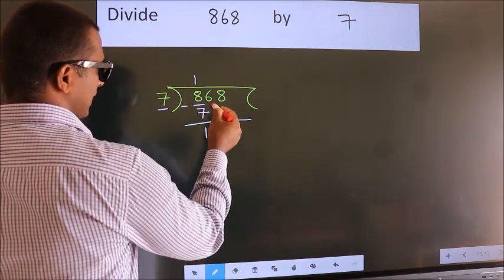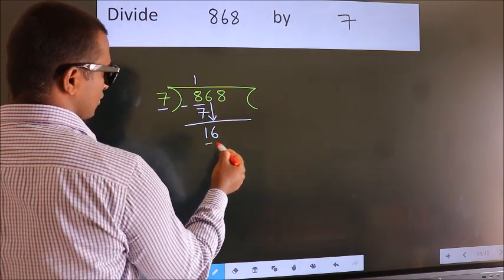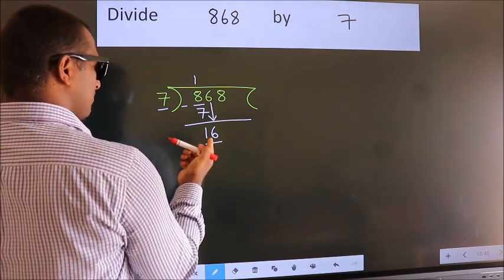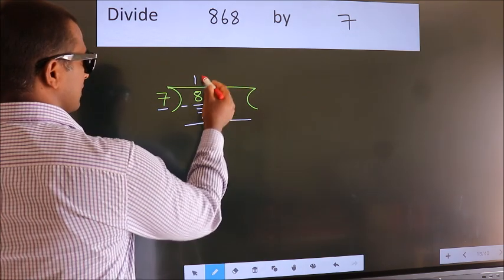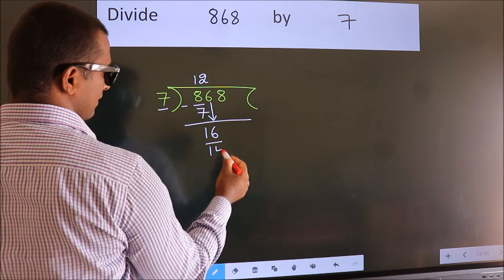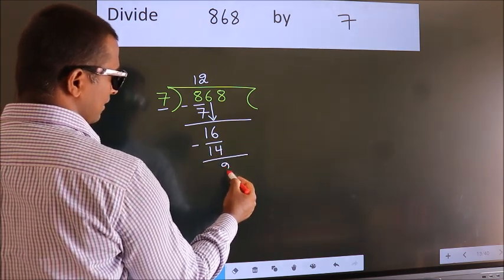After this, bring down the next number. So 6 down. So 16. A number close to 16 in the 7 table is 7 twos is 14. Now we subtract. We get 2.